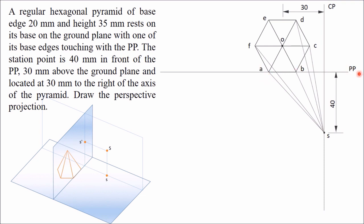These rays are intersecting the picture plane at different points, and you need to get all those points. When you join S with A you get one intersection point; join S with F you get another. B, O, and E are in the same line, so joining these gives an intersection point at one place — there will be three points here. When you join S with D you get another intersection point. Get the intersection point of all these visual rays with the picture plane.